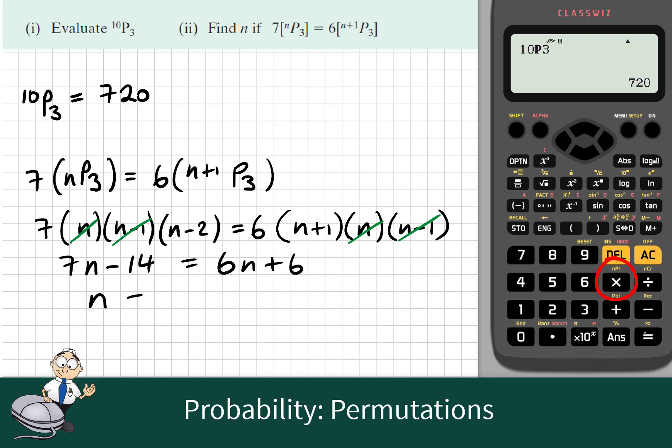Now we'll take 6n from both sides and add 14 to both sides giving that n equals 20.